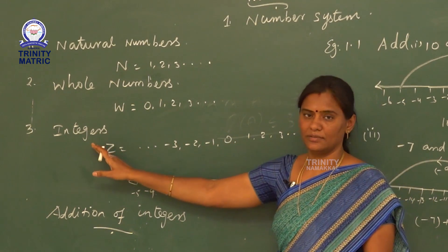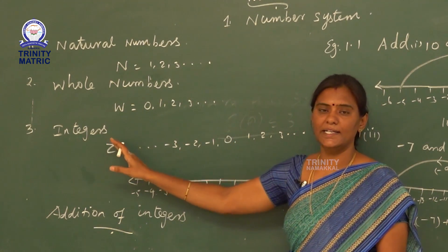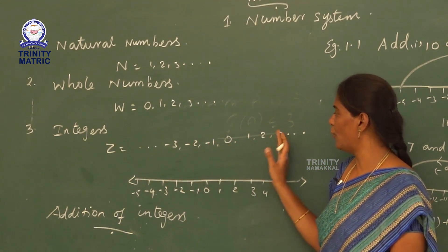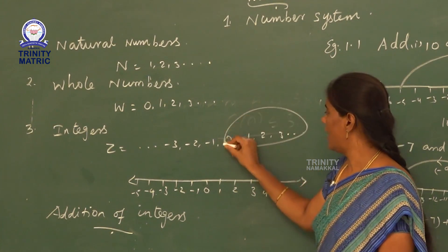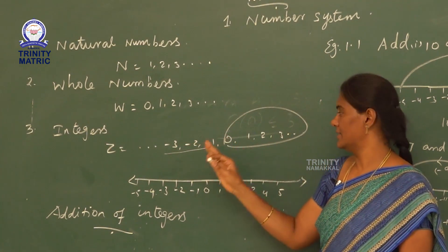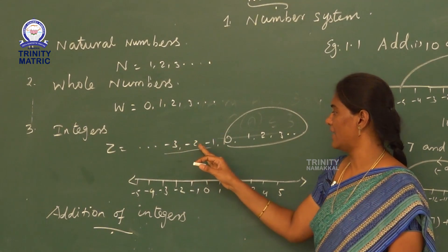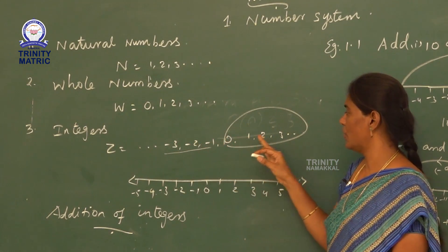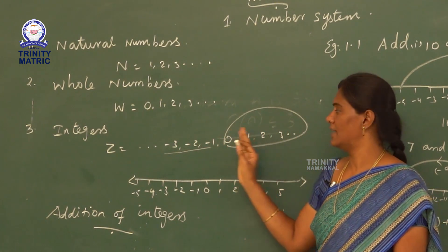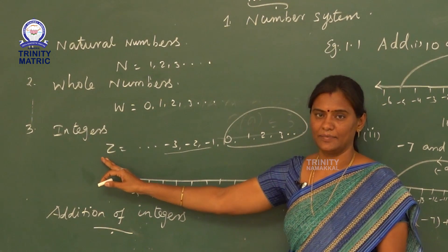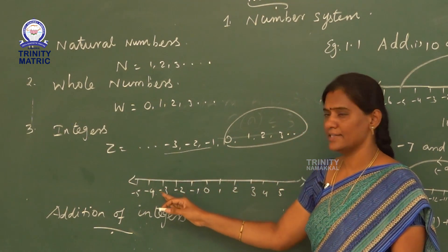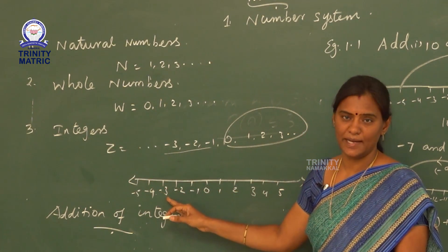Next, integer. Integer is nothing but the collection of whole numbers and negative numbers. That is minus 3, minus 2, minus 1, 0, 1, 2, 3, etc. are called integers. It is denoted by Z.